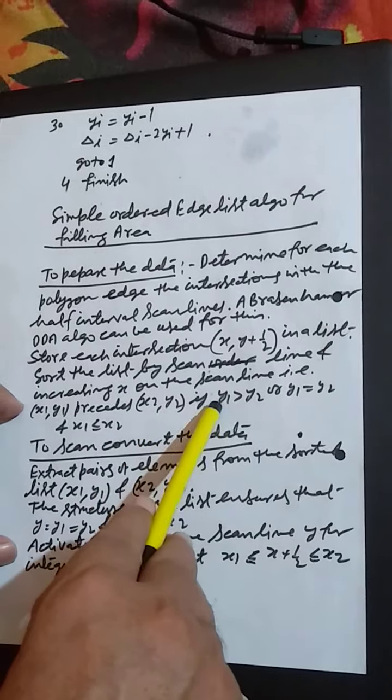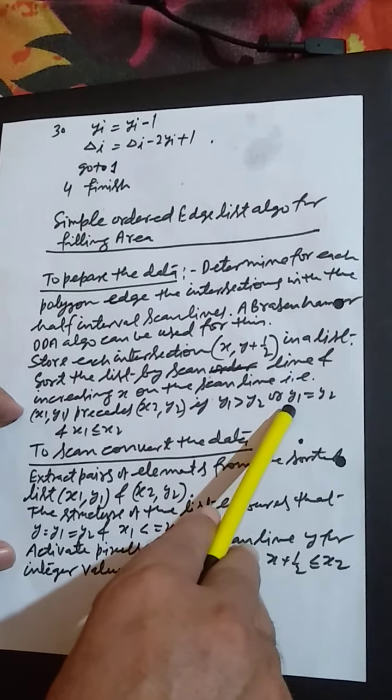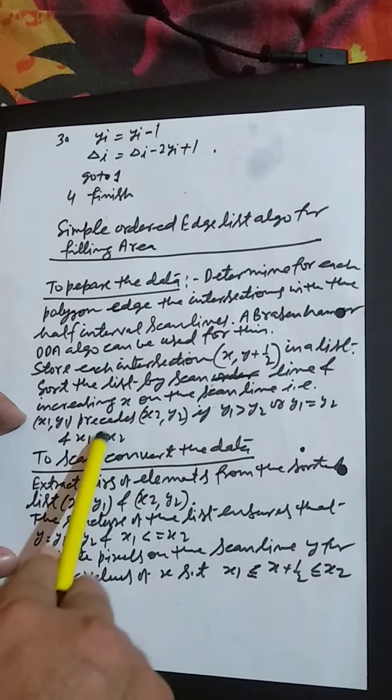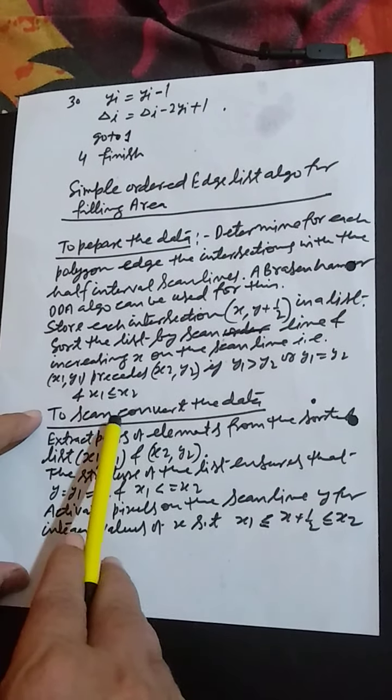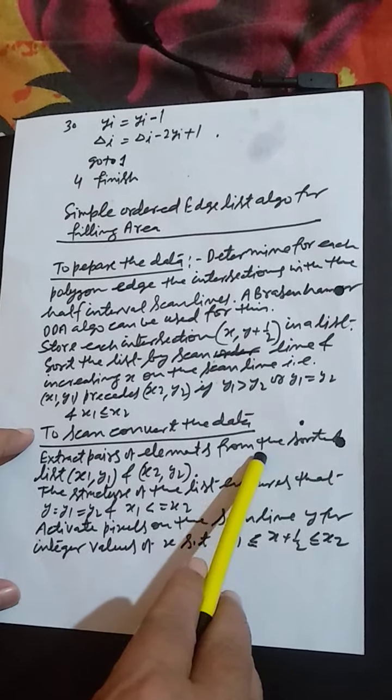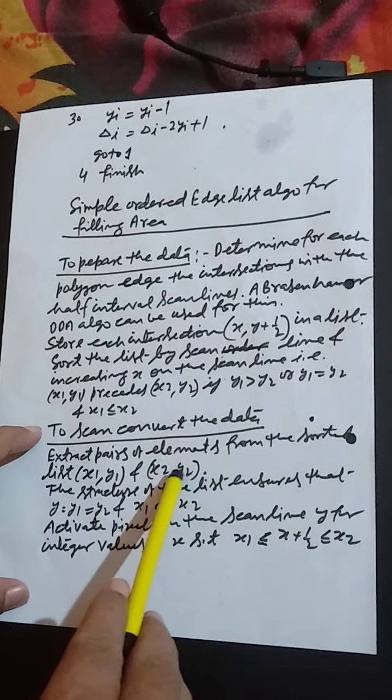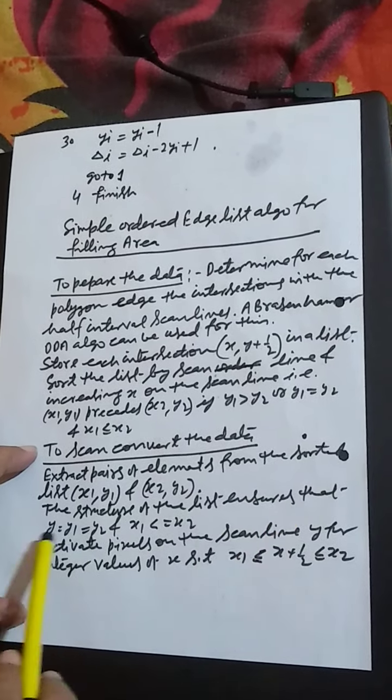Sort the list by scan line and increasing X on the scan line, that is X1 Y1 precedes X2 Y2 if Y1 is greater than Y2 or Y1 is equal to Y2 and X1 is less than or equal to X2. The second step of this algorithm is to scan convert the data.